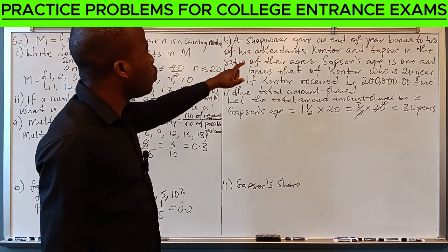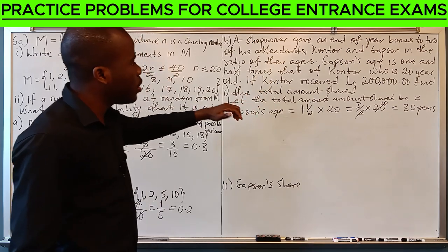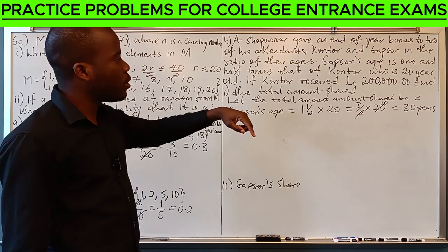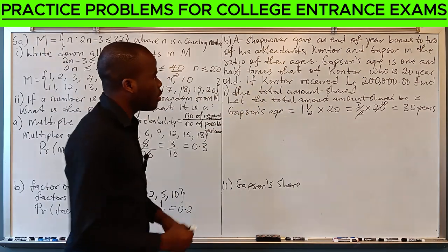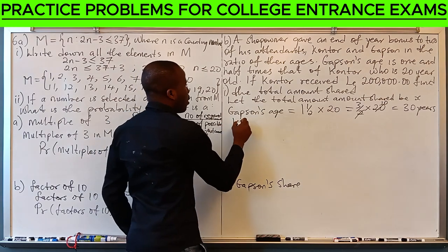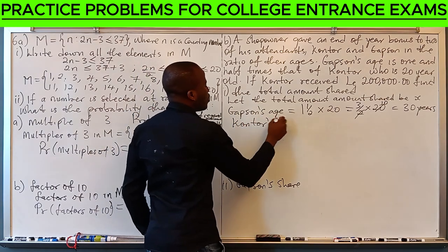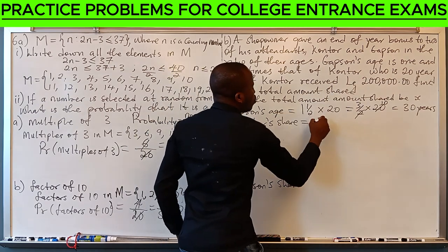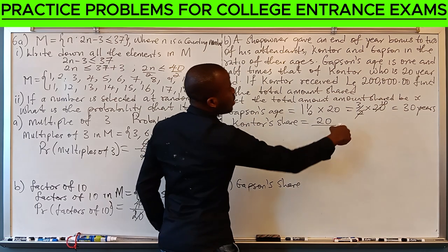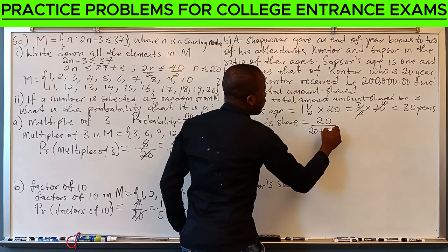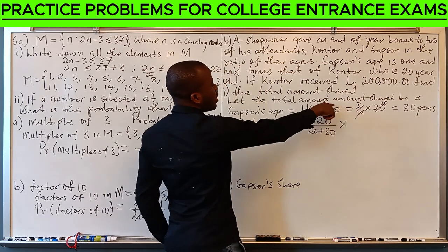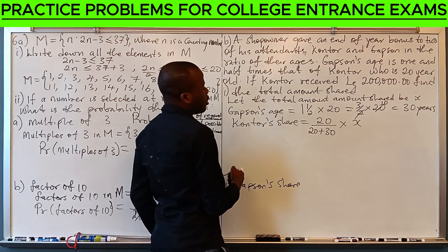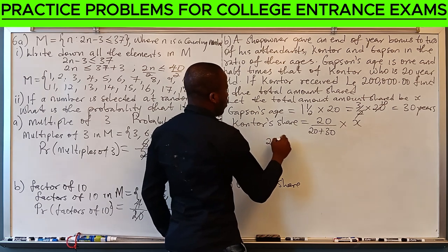So, the ratio in which the shop owner gave this bonus is 20 to 30, Cantor to Gapsen. Now, let's find Cantor's share. Cantor's share is his age, 20, over the sum of their ages, which is 20 plus 30, times the amount shared, which is X. And we are told that Cantor's share is 200,000 Egyptian pounds.